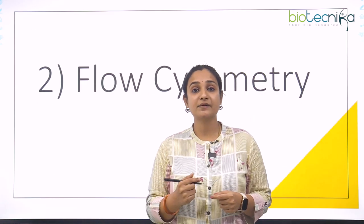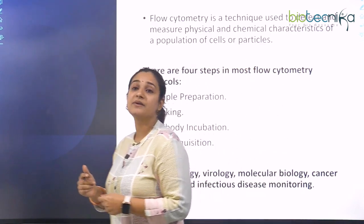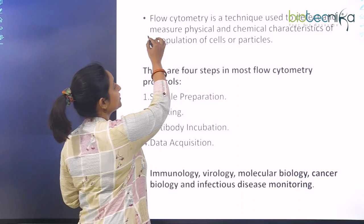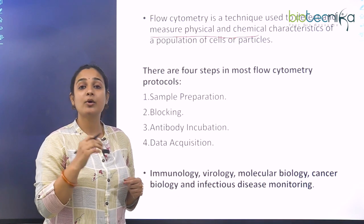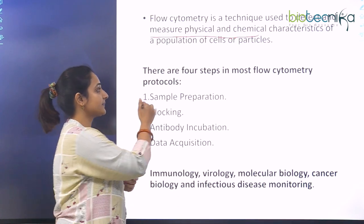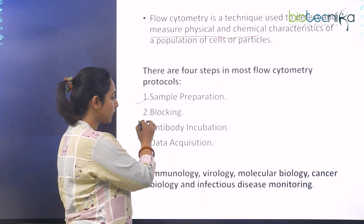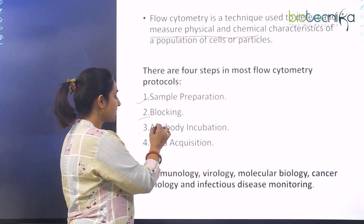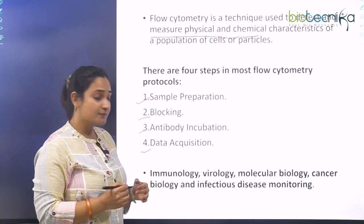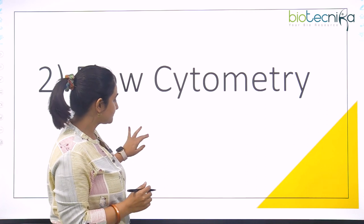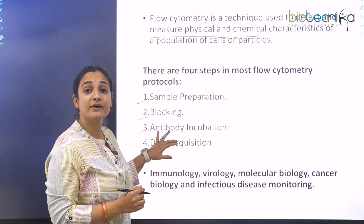The second technique is flow cytometry. Flow cytometry is used to detect and measure the physical and chemical characteristics of a population of cells or particles. There are four steps: sample preparation, blocking, antibody incubation, and data acquisition. Flow cytometry is used more in immunology, virology, molecular biology, cancer biology, and various infectious disease monitoring.